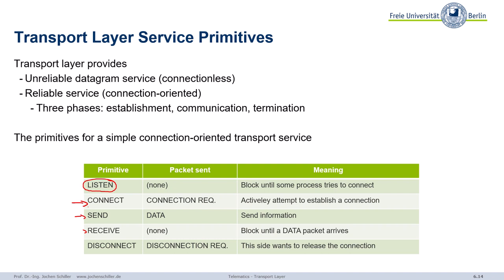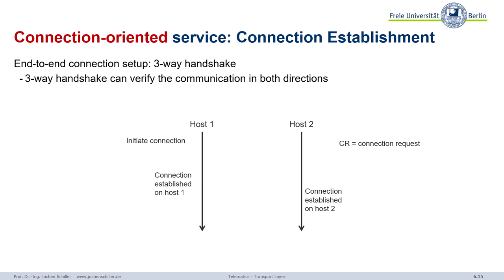Let's create a connection. On the transport layer, we do something called a three-way handshake. I'll first show how it works, then discuss why a two-way or one-way handshake doesn't work. The three-way handshake verifies that both sides can be sure the connection is established. In our message sequence diagram, time flows from top to bottom. Host 1 sends a connection request packet. Host 2 receives it and sends back an acknowledgement.